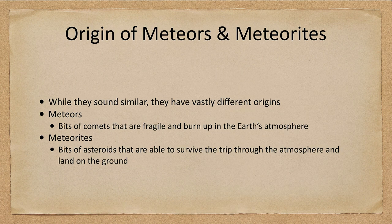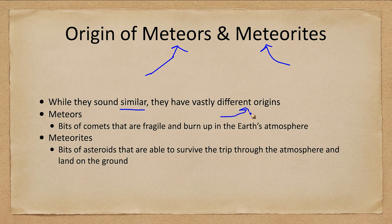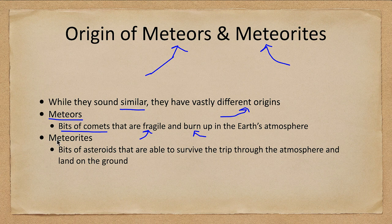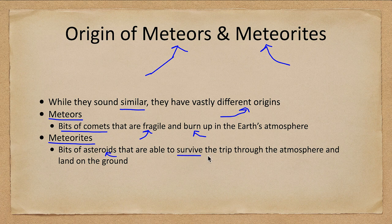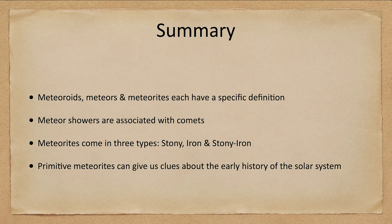It's important to differentiate meteors from meteorites, as they have vastly different origins. A meteor is generally a bit of a comet — fragile material that burns up in Earth's atmosphere and never reaches the ground. Meteorites, on the other hand, are generally bits of asteroids. Being larger and denser, even small pieces can survive the trip through the atmosphere and land on the ground for us to study.